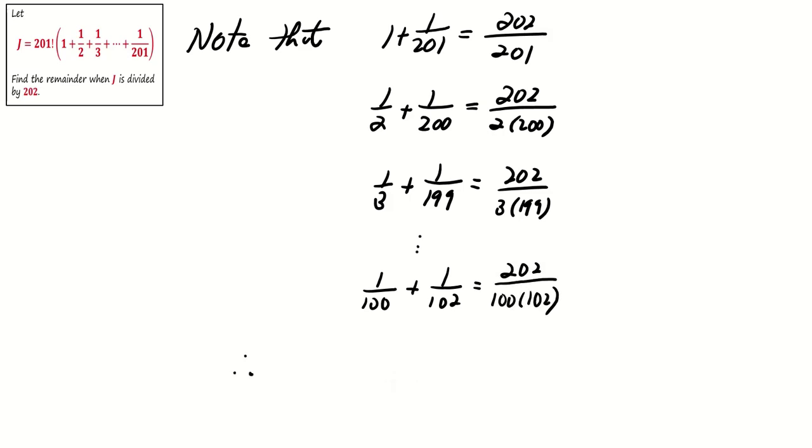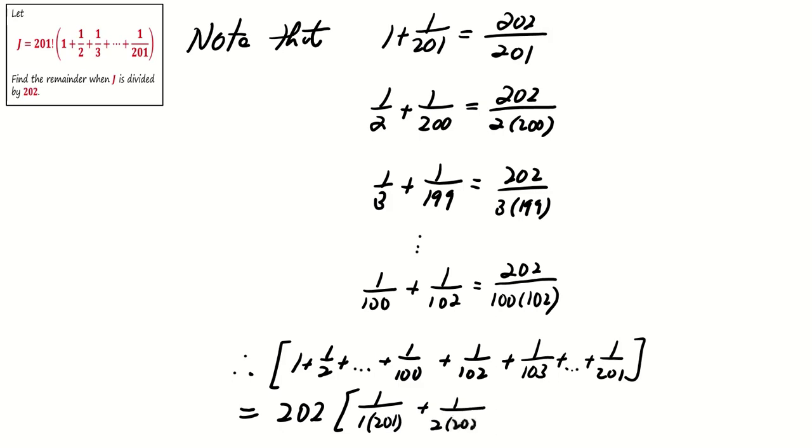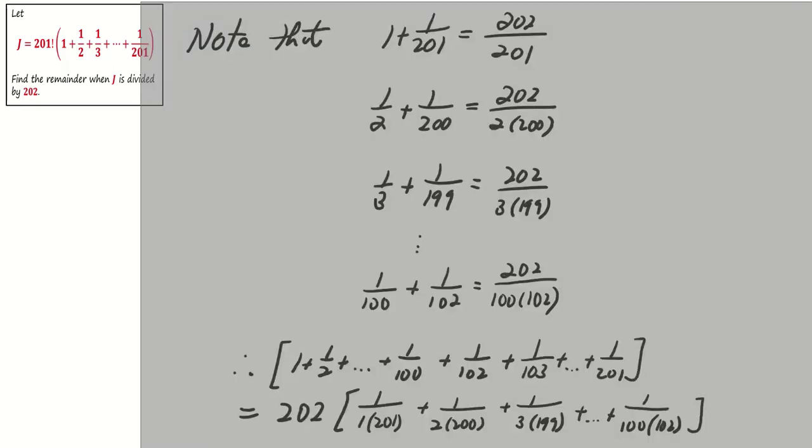As a result, the sum of this fraction 1, 1 over 2, 1 over 3, all the way to 1 over 201 except for 1 over 101 can be expressed as 202 times the sum of 1 over 1 times 201, 1 over 2 times 200, all the way up to 1 over 100 times 102.